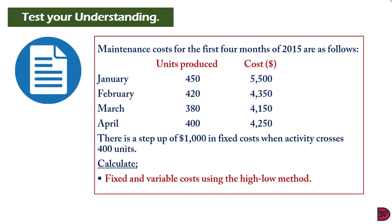Let's test our understanding. Maintenance costs for the first four months of 2015 are: January — 450 units, $5,500; February — 420 units, $4,350; March — 380 units, $4,150; April — 400 units, $4,250. There is a step-up of $1,000 in fixed cost when activity crosses 400 units.